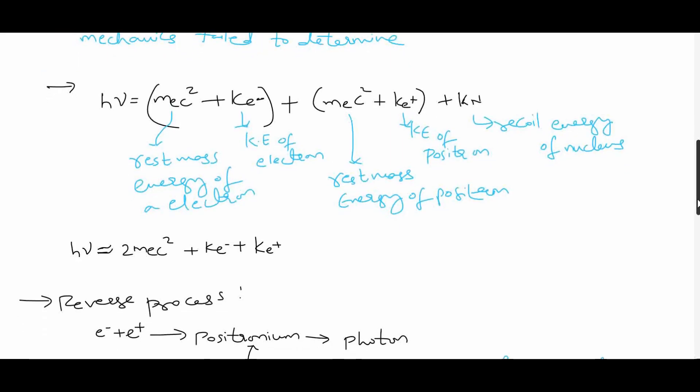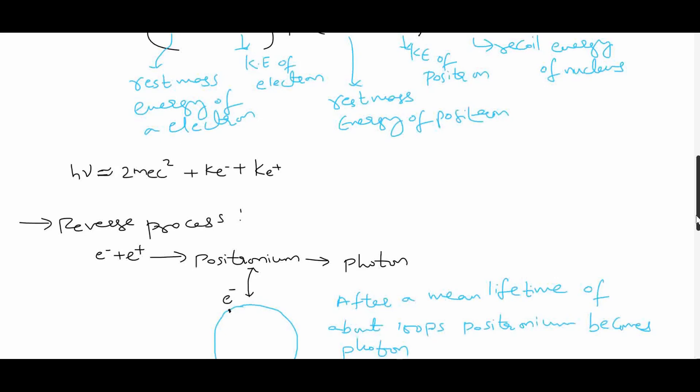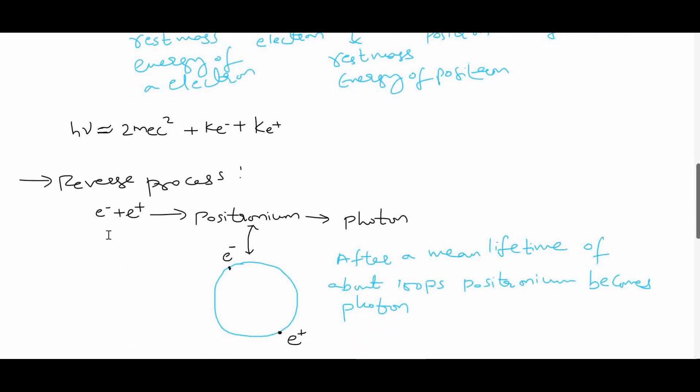Whenever the process is reversed, when electron and positron collide, that results in positronium. Basically, this positronium is one unit, or there is some binding between electron and its antiparticle positron, which is called positronium.